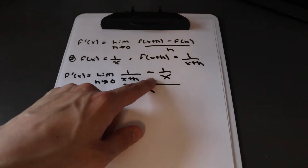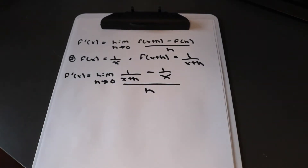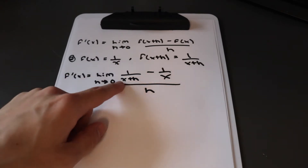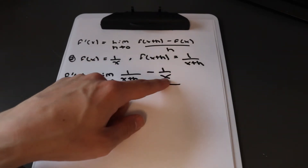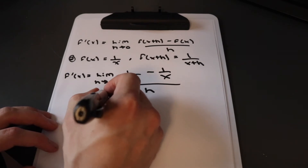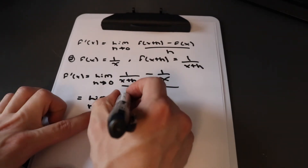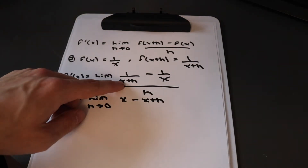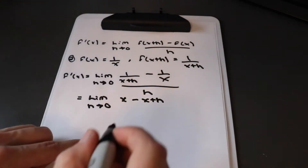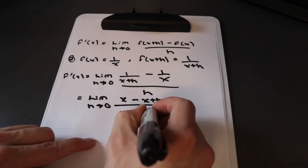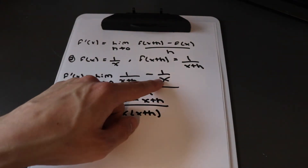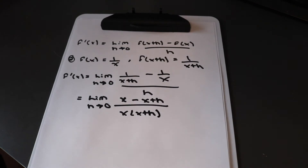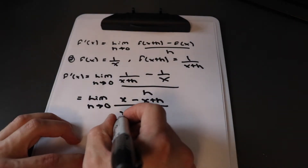We need to deal with the partial fraction on top by combining it with a common denominator. We multiply x top and bottom on one side, and x plus h top and bottom on the other side. That gives us x in the numerator on one side minus x plus h on the other, over the common denominator of x times x plus h, all over h.